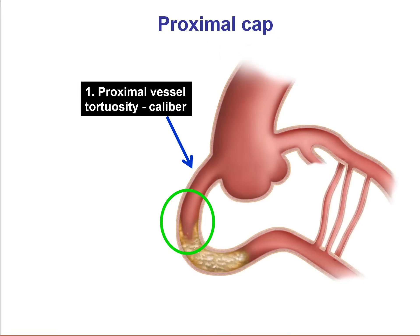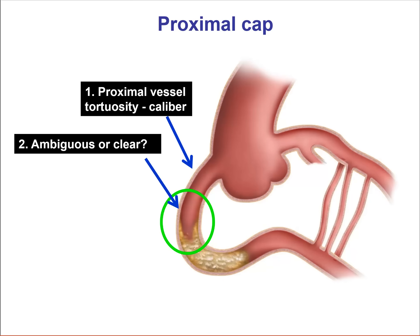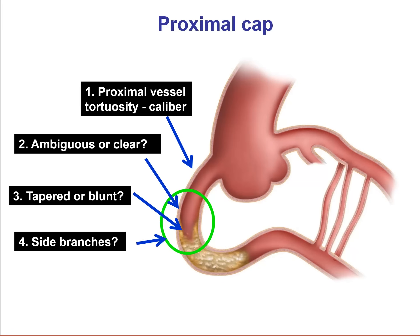What do we look for in the proximal cap? First, how the vessel looks proximal to the occlusion — is the vessel diseased, is there calcification, what is the tortuosity? Second, do we understand where the proximal cap is, or is it ambiguous? Third, is the proximal cap tapered or blunt? Tapered is easier to penetrate compared to blunt. Fourth, are there any side branches that can serve as outlets for the wire, or can be used for side branch anchoring if more support is needed? Finally, we look at calcification both proximal to the occlusion and at the proximal cap, which might require more aggressive techniques to allow penetration.